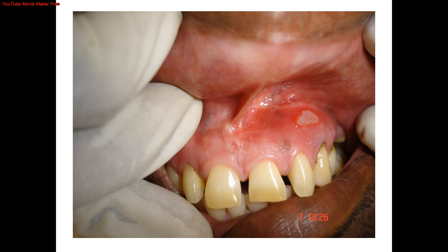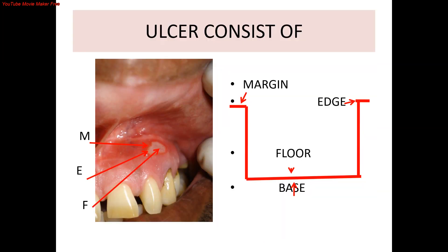A surgical incision is also a disruption of epithelium, but it is without microscopic changes. An ulcer consists of margin, edge, floor, and base, as shown in this schematic diagram. For better understanding: the margin is the junction between normal epithelium and the ulcer; the edge is the junction between the margin and the floor. The floor is the exposed surface of the ulcer consisting of polymorphonuclear leukocytic exudate, and the base is what the ulcer rests on, which is better felt than seen.